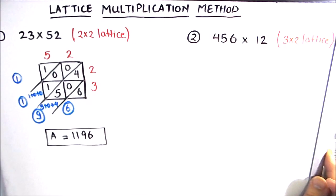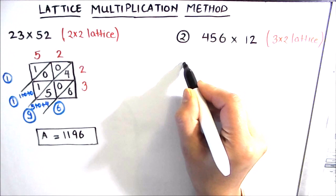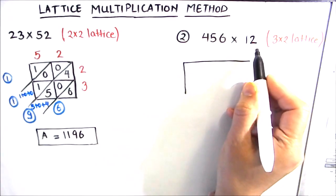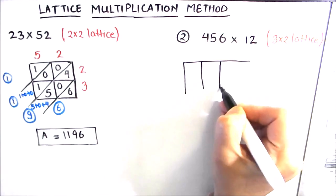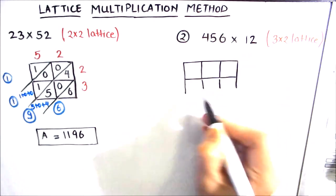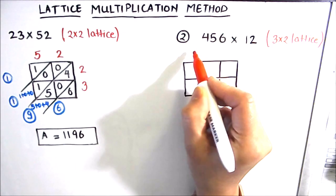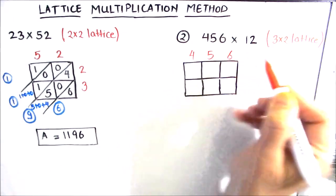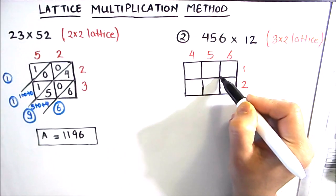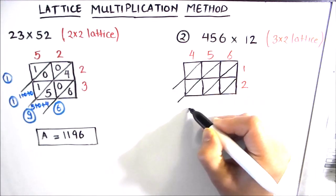Let's move on to example two, where we are going to multiply a three-digit number by a two-digit number. We first make a rectangle. Since the first number is a three-digit number, we draw three columns, and since the second is a two-digit number, we draw two rows. We write 456 along the three columns and 12 along the two rows, then draw the diagonals, extending them outward to write the results.